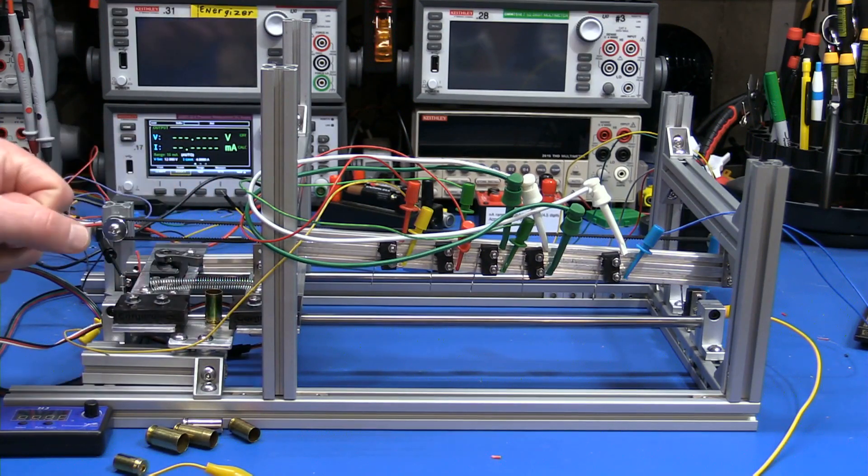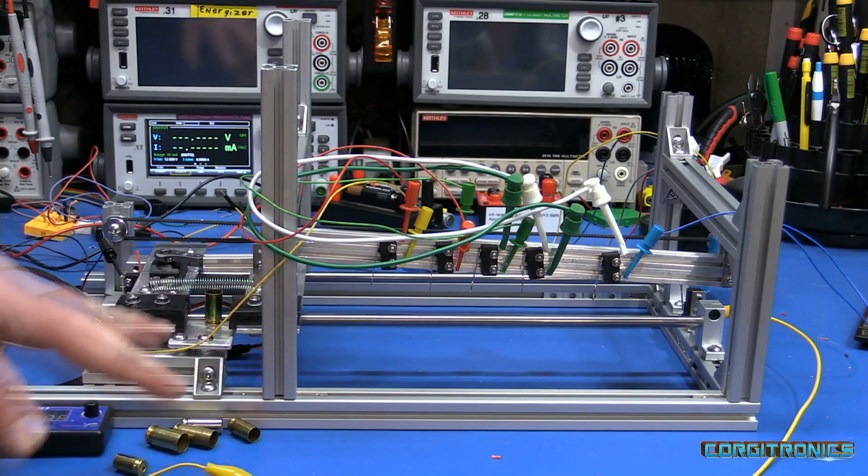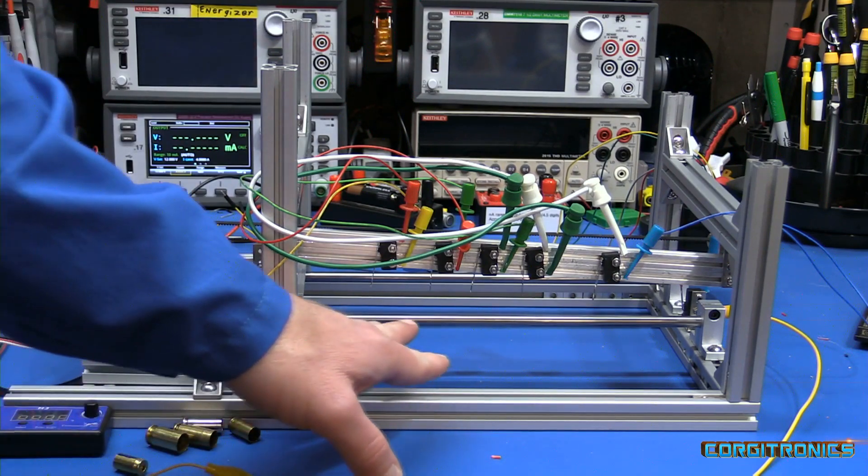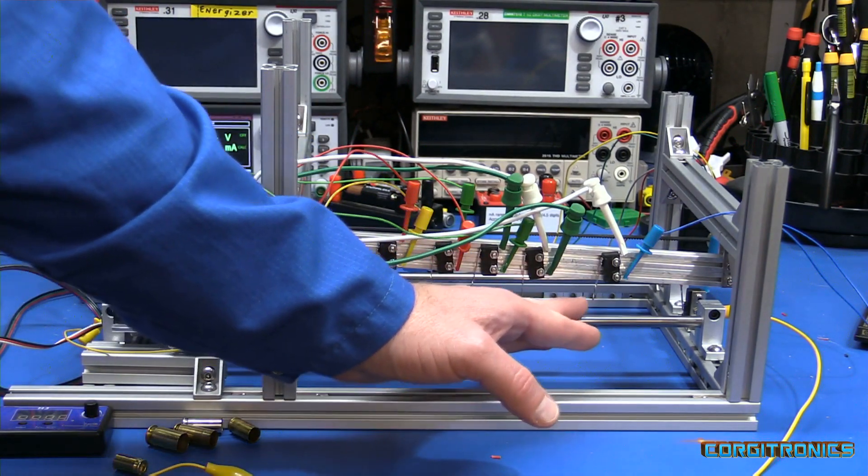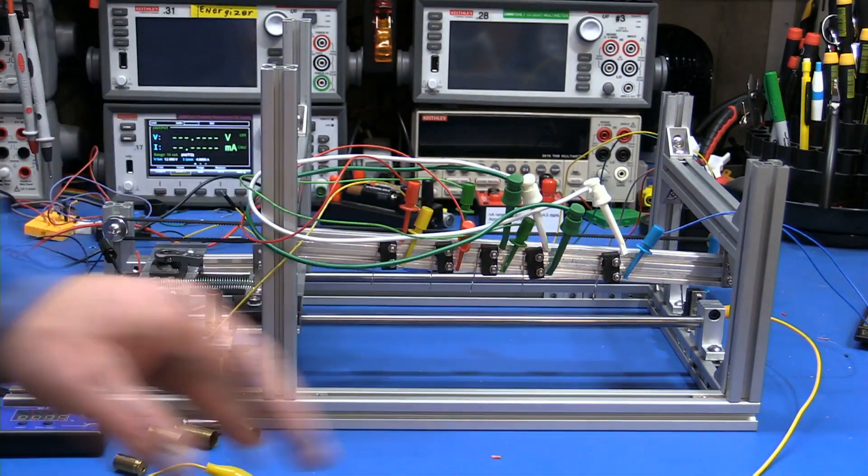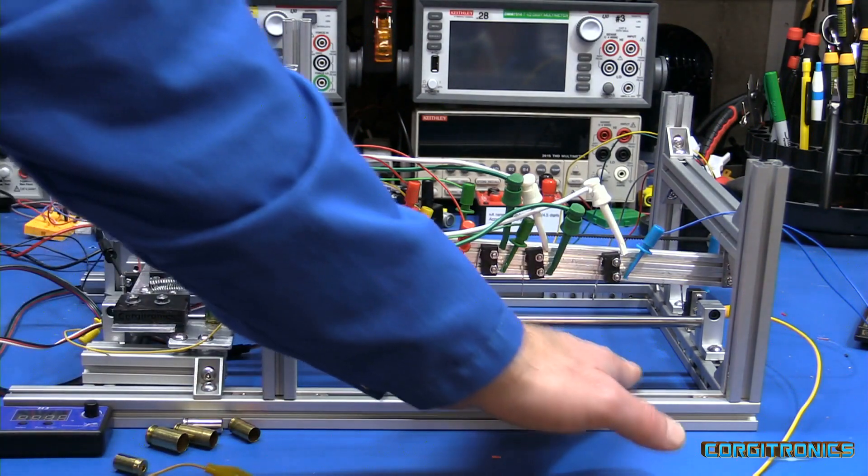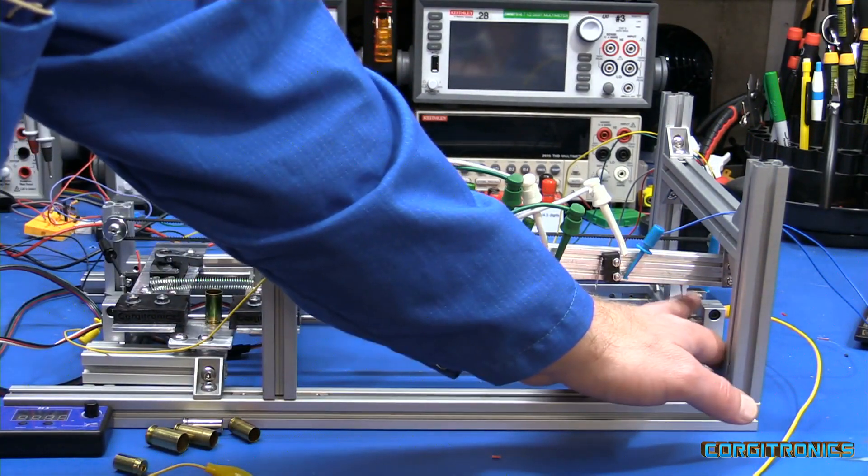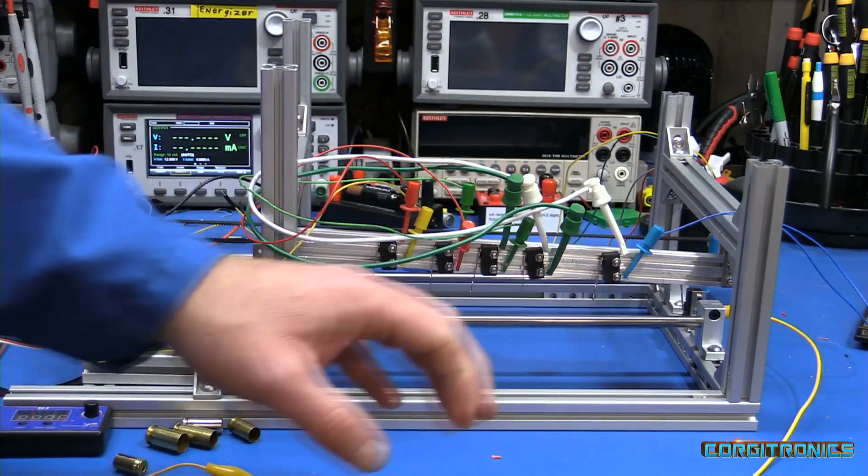A gripper closes and then slides across underneath a set of micro switches until it finds one of the appropriate height. Then the gripper releases the case and the carrier returns to pick up another cartridge. If it doesn't hit an appropriate micro switch, it'll get to the end and hit a limit switch, let it go into a junk bin, and then come back.